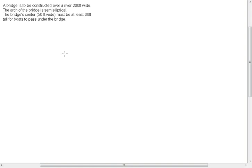Okay, so here is another ellipse problem. A bridge is to be constructed over a river 200 feet wide. The arch of the bridge is semi-elliptical. The bridge's center, 50 foot wide, must be at least 30 feet tall for boats to pass under the bridge.